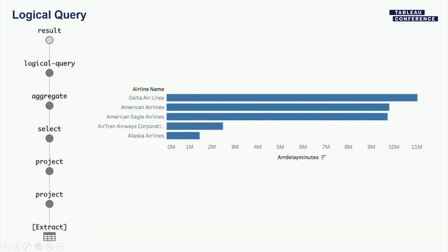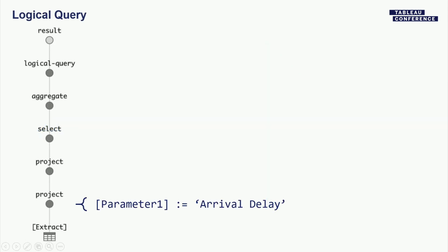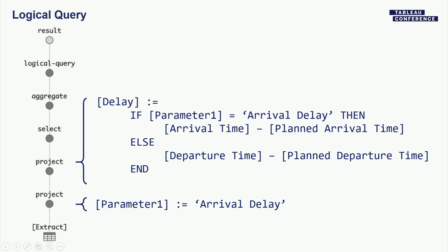I managed to build my logical query; the output is this bar chart. But we're not stopping there — that's just the first version. Even in this almost unbelievably simple viz and query, there are simplifications we can do. It's very common to use parameters to reuse calculations in different ways. Here I have a parameter specifying arrival delay, and on the second projection I have a calculation conditional on whether the parameter gives arrival delay or departure delay. The simplifier notices these things are the same, so I can do inline substitution.